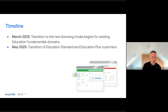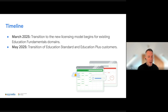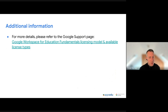As a reminder on the timeline: for domains on the free edition these changes have already rolled out, so you'll be seeing this already. For Education Plus customers this is rolling out this month, so keep an eye on your Billing settings. You should get a notification from Google when your domain gets updated. We've got some additional information here and I'll share this slide deck — it links to a useful article going through these different license types and the transition in much more detail.